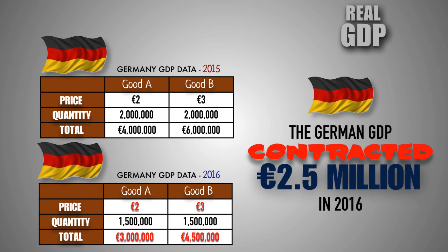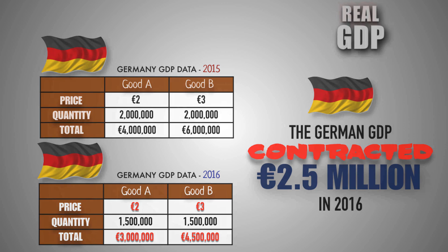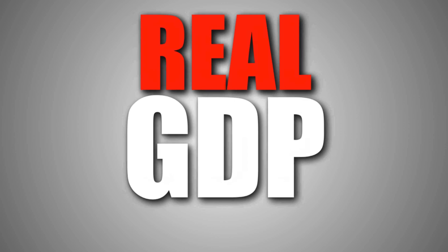Nominally, it appeared Germany experienced economic growth, but that was due entirely to inflation. In fact, Germany experienced economic contraction in 2016. This is a great example of how inflation can make nominal GDP data inaccurate, and why it is important to find real GDP when determining whether or not a country is accomplishing the goal of promoting long-run economic growth. Real GDP gives you the real story.